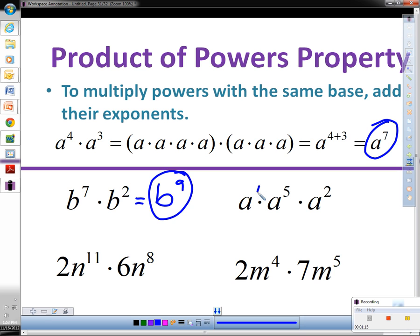When there's no exponent on a number, we can put a one there. So here we have a to the first times a to the fifth times a to the second power. We leave our base a and we add the exponents. One plus five plus two gives us eight. So simplified, this is a to the eighth power.